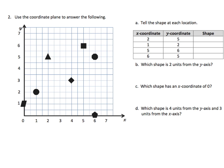This next part here tells us to use the coordinate plane to answer the following. Looking at A, we need to tell what shape is at each location. You've probably done some of this before, but we'll review it for you. We have an x-coordinate of 2 and a y-coordinate of 5. So what I'm going to do here is look at my x-axis, and I'm going to go out to 2.